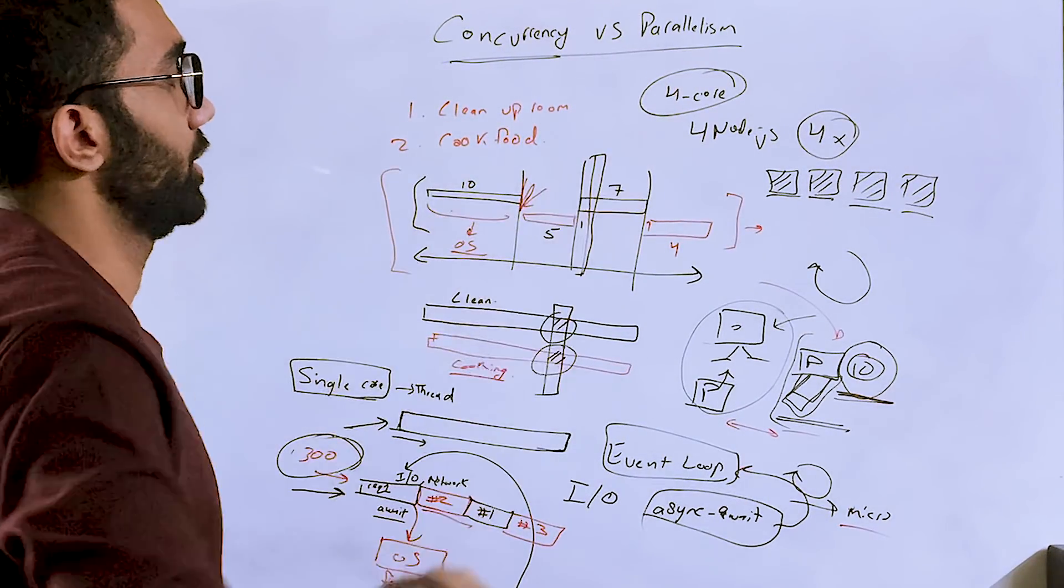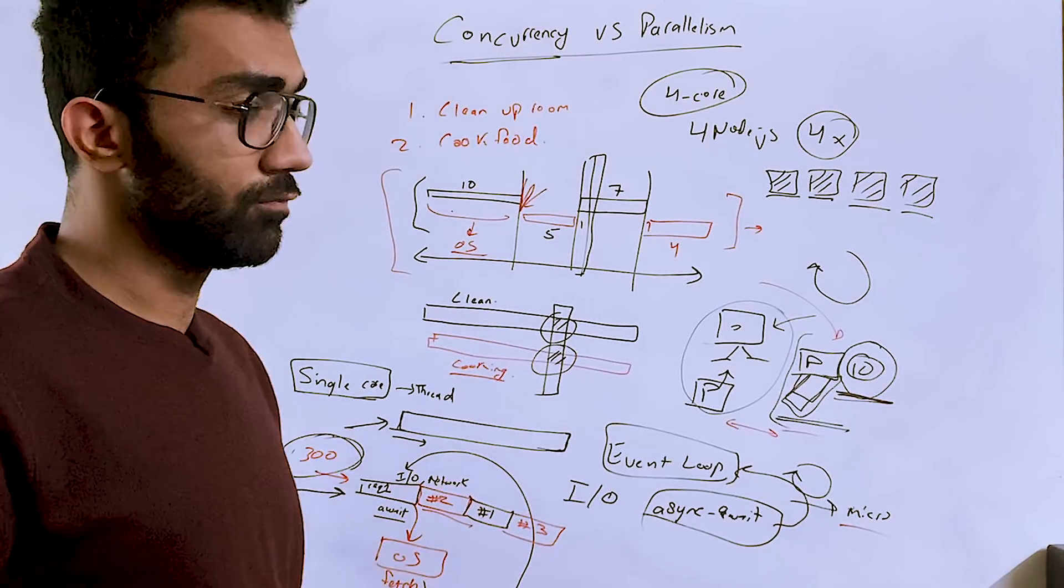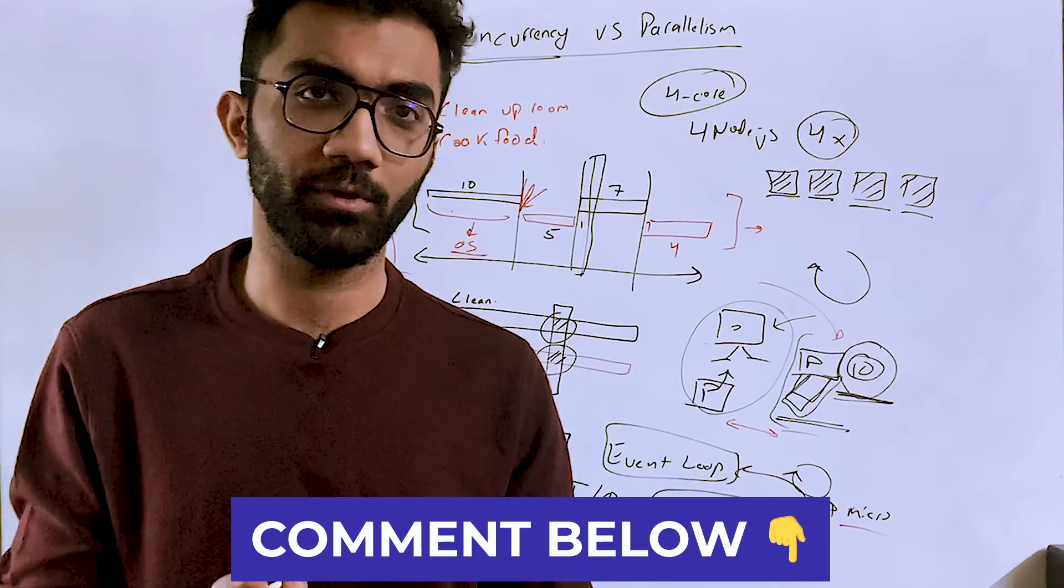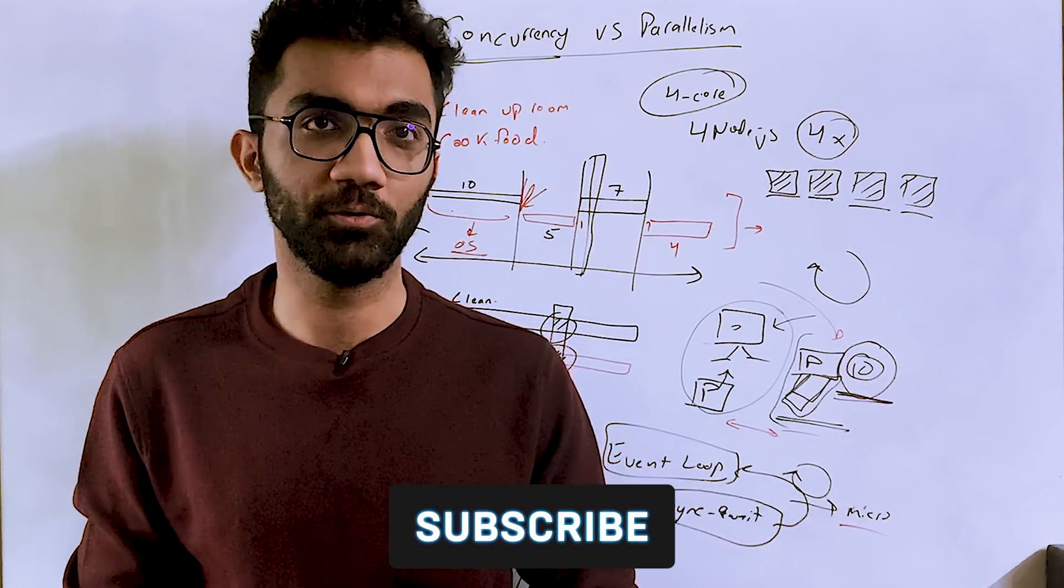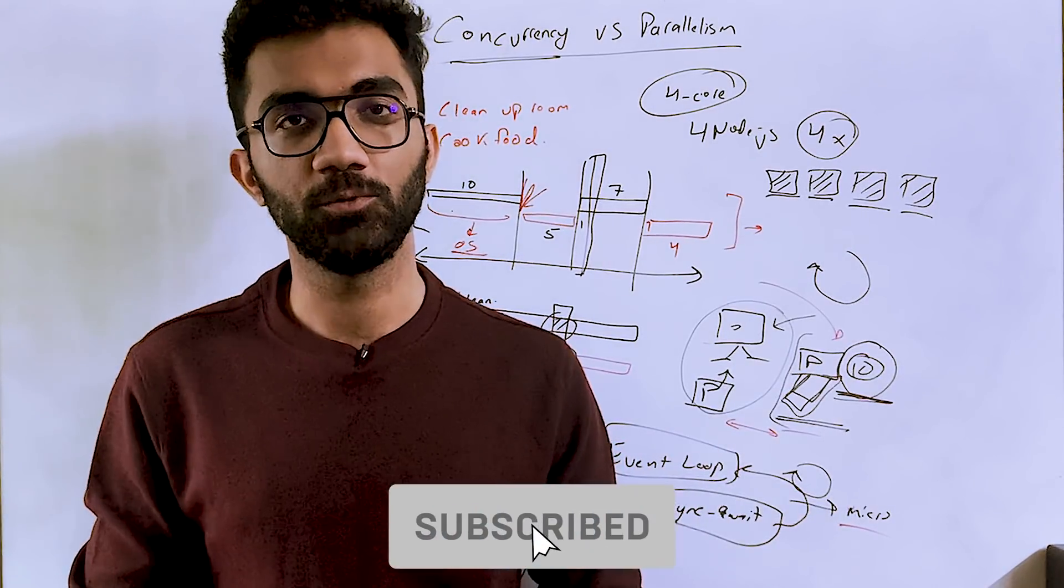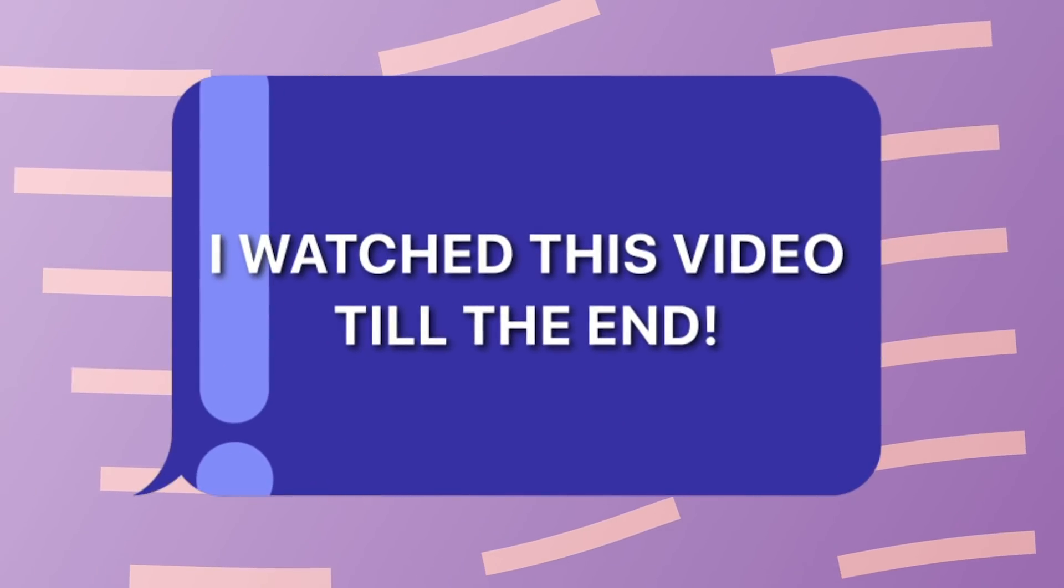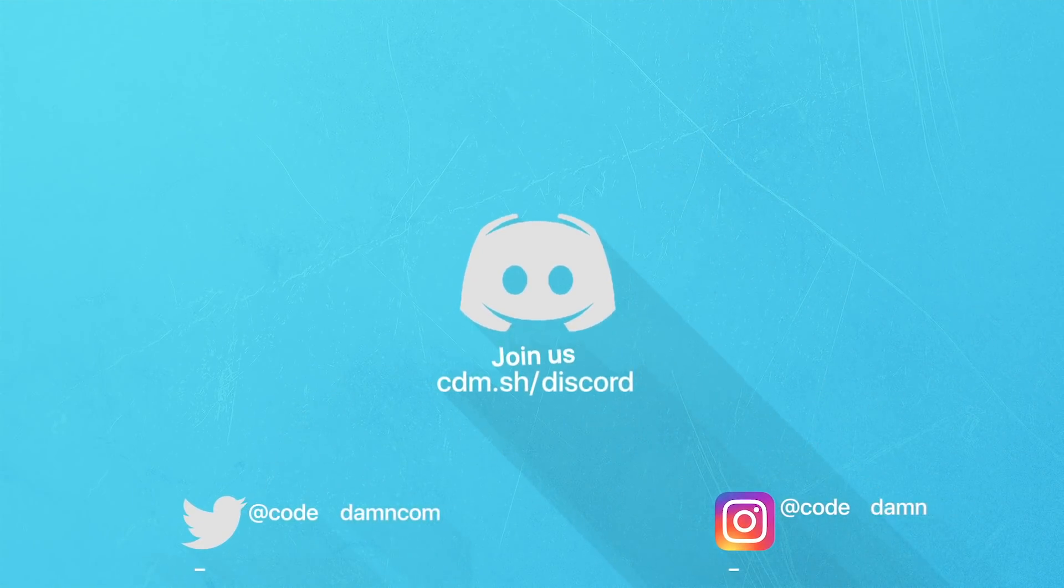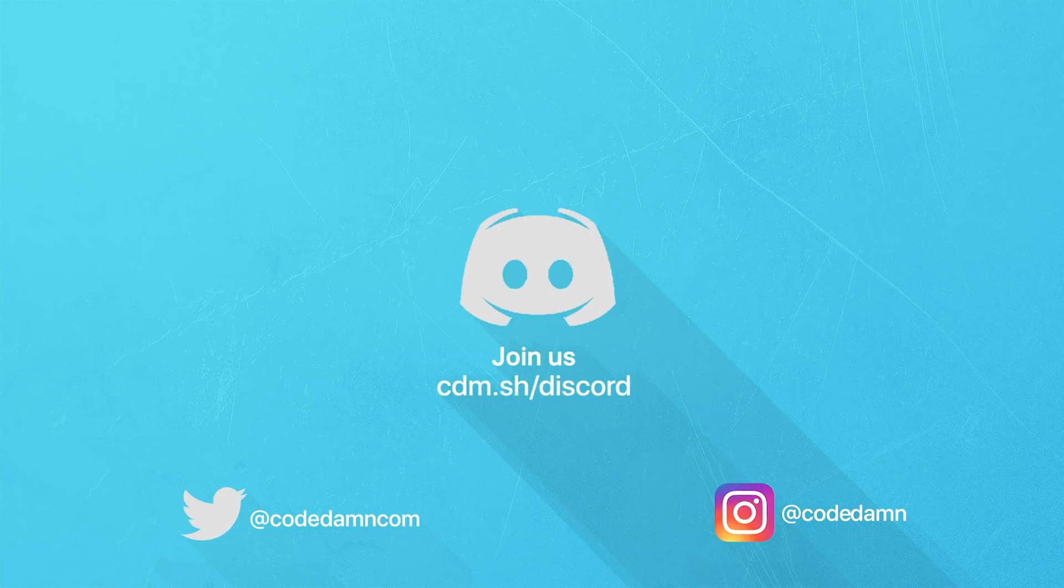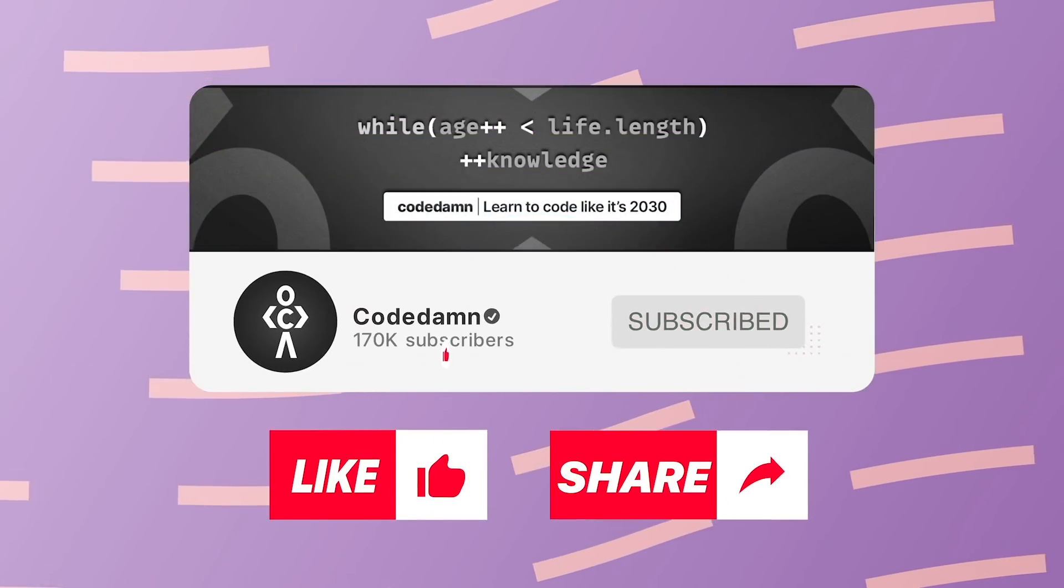So yeah, that's pretty much it—a little bit of introduction into what concurrency is, what parallelism is, and how it works in the context of Node.js. Hopefully this was a useful introduction. Let me know in the comments below: what do you think about Node, concurrency, and parallelism? If you learned anything new, that is all for this one. I'm gonna see you in the next video really soon. If you're still watching, make sure you comment 'I watched this video till the end.' Also, if you're not part of Code Damn's Discord community, you're missing out on a lot of events we organize on a weekly basis. Make sure you like the video, subscribe to the channel if you haven't already, and thank you so much for watching.